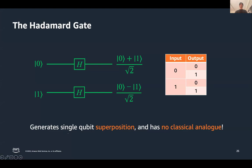The important takeaway is that the Hadamard gate generates a single-qubit superposition and has no classical analog. You cannot reproduce this outcome by any classical means or any combination of classical gates. This is a true quantum gate that represents one of the fundamental principles of quantum mechanics: superposition.